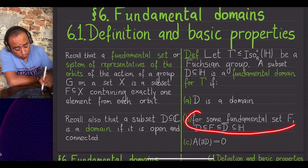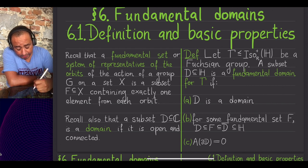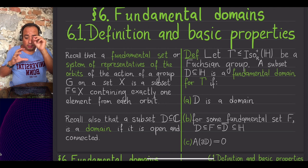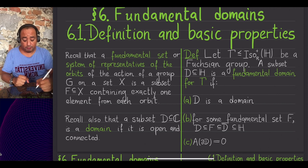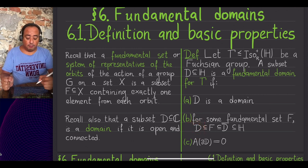For property B, notice that we are not requiring D itself to be a fundamental set, but rather that D together with some points in the boundary forms a fundamental set. So to obtain a fundamental set from D, it may be necessary — and in most cases it is necessary — to adjoin some points or segments in the boundary. On the other hand, notice that this does mean that different points of D are never gamma-equivalent, although different points in its closure may be equivalent.